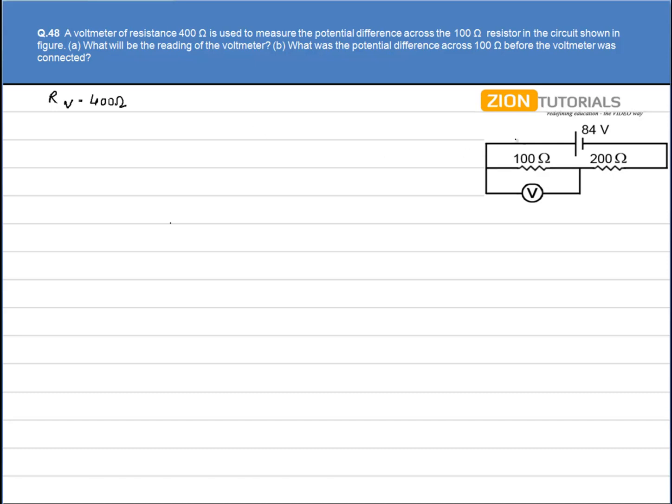Let's suppose that current I is coming out of the battery. First of all, we calculate R equivalent. To calculate the R equivalent, we have 100 ohm in parallel with 400 ohm.